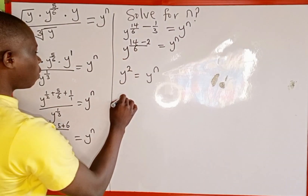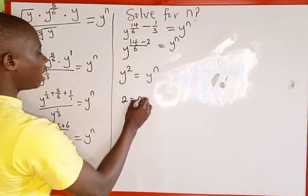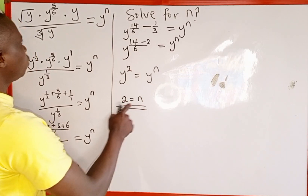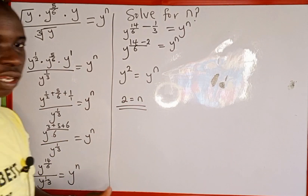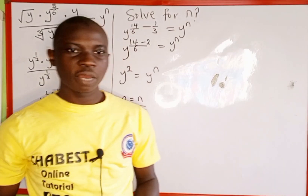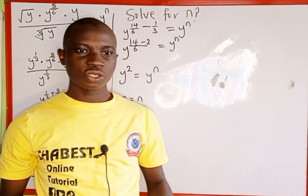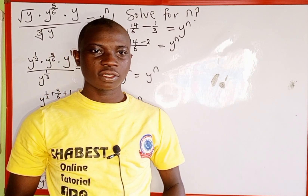The first power is 2, which is equal to n. Therefore, n equals 2 is the value that satisfies this radical equation. Thank you for watching, and please follow and subscribe for more videos like this.